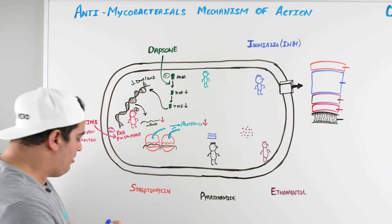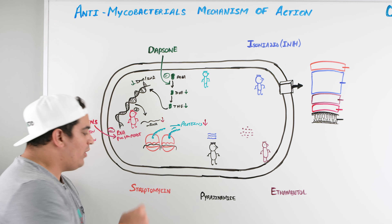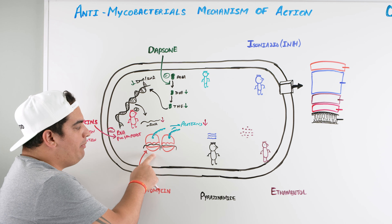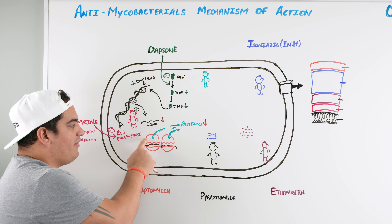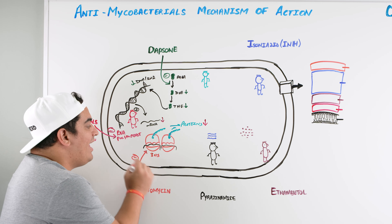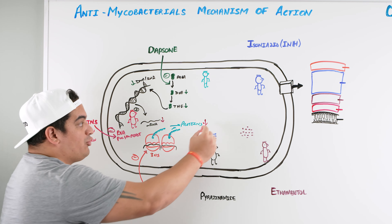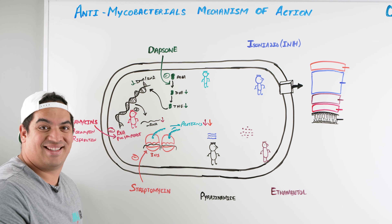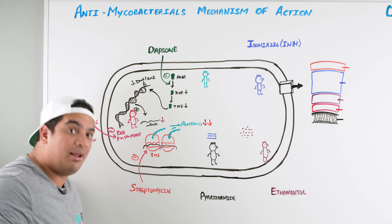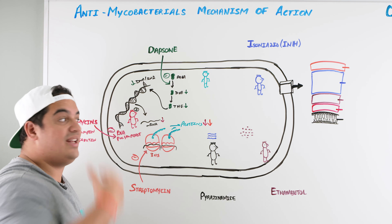Streptomycin is a second-line agent used in TB infections. It inhibits a very specific component: the 30S ribosomal subunit. You know how mRNA needs to interact with the ribosome — specifically the 30S and 50S ribosomal subunits. Streptomycin binds to the 30S ribosomal subunit and inhibits it from being able to interact with RNA and make proteins, thereby decreasing protein synthesis. So remember: streptomycin inhibits the 30S ribosomal subunit; rifamycin inhibits RNA polymerase; dapsone inhibits the PABA pathway.